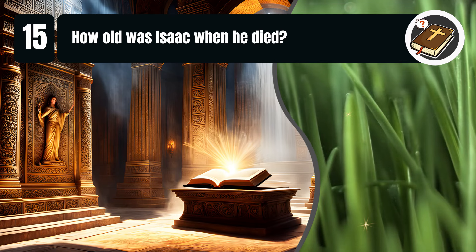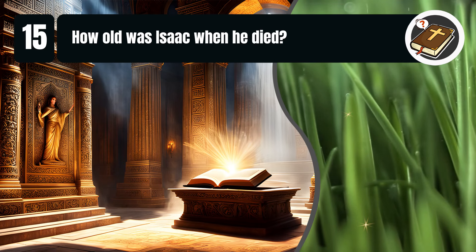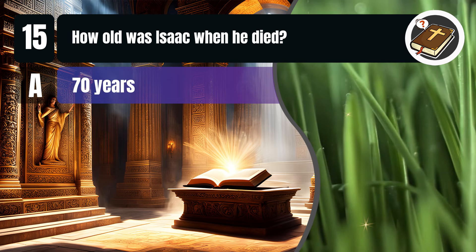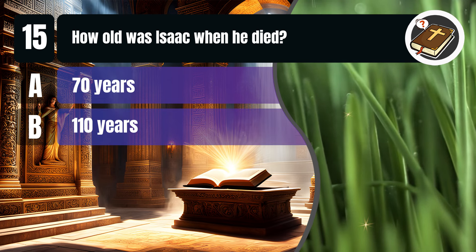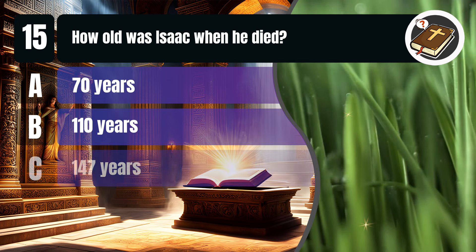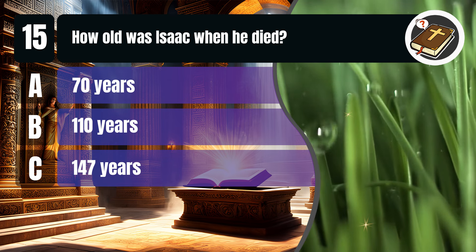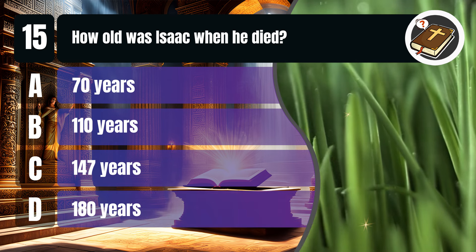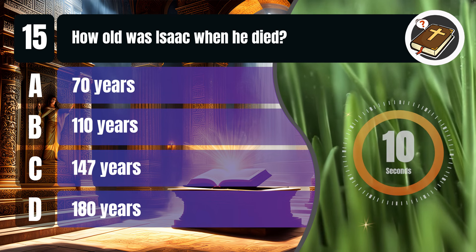Question 15. How old was Isaac when he died? A. Seventy years. B. One hundred and ten years. C. One hundred and forty-seven years. D. One hundred and eighty years. You get 10 seconds.